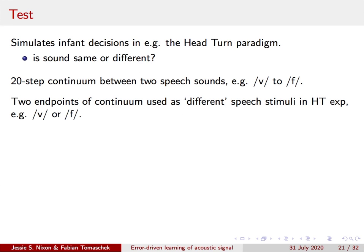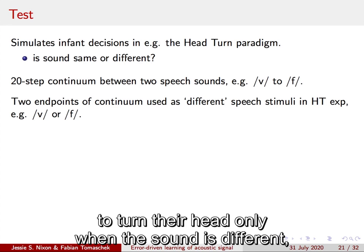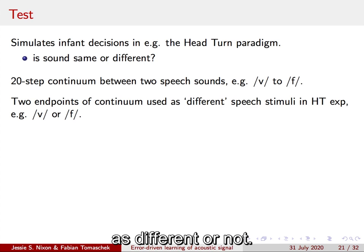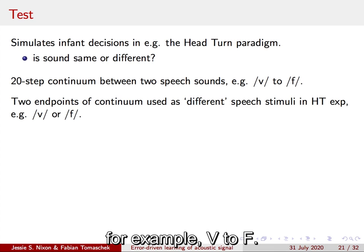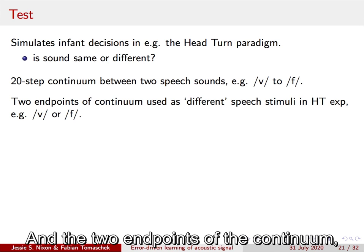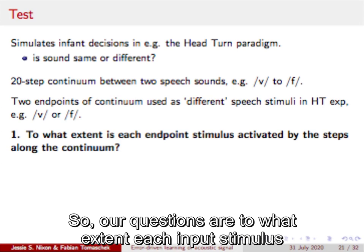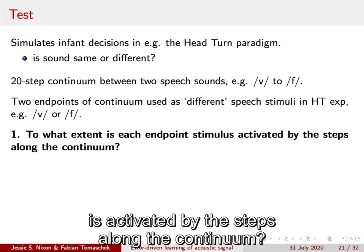Our test simulates infant decisions to turn their head or not in the head-turn paradigm. Recall that infants are trained to turn their head only when the sound is different, so this measures whether they perceive the sound as different or not. We used a 20-step continuum between each sound pair, for example V to F, and the two endpoints of the continuum represent the sounds that are used as the different stimuli in these infant experiments.